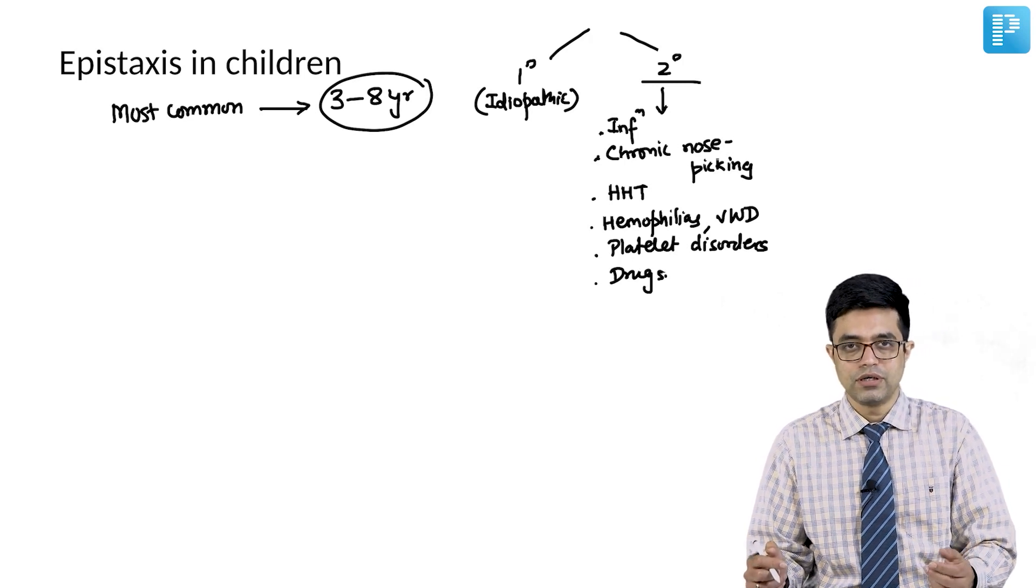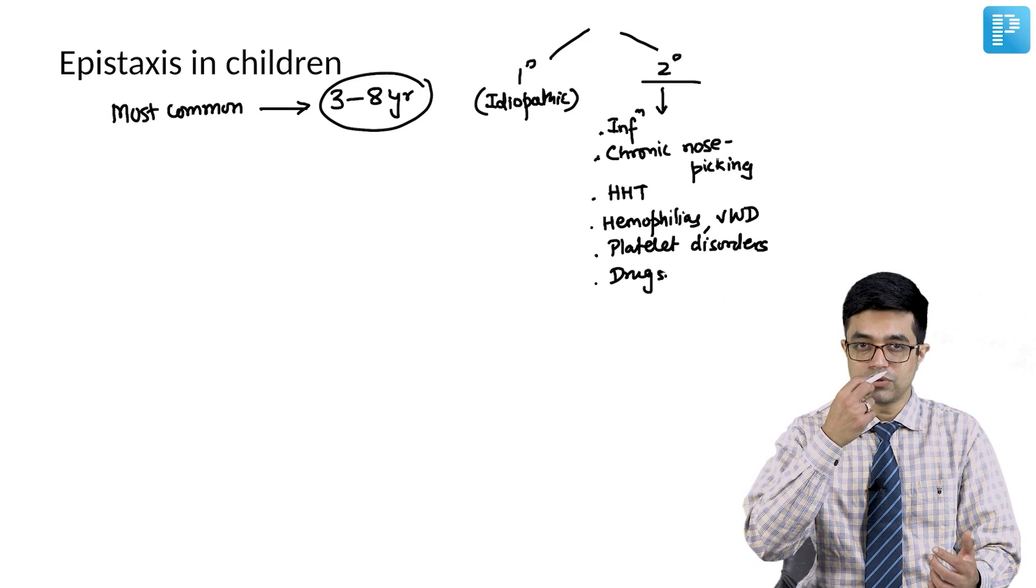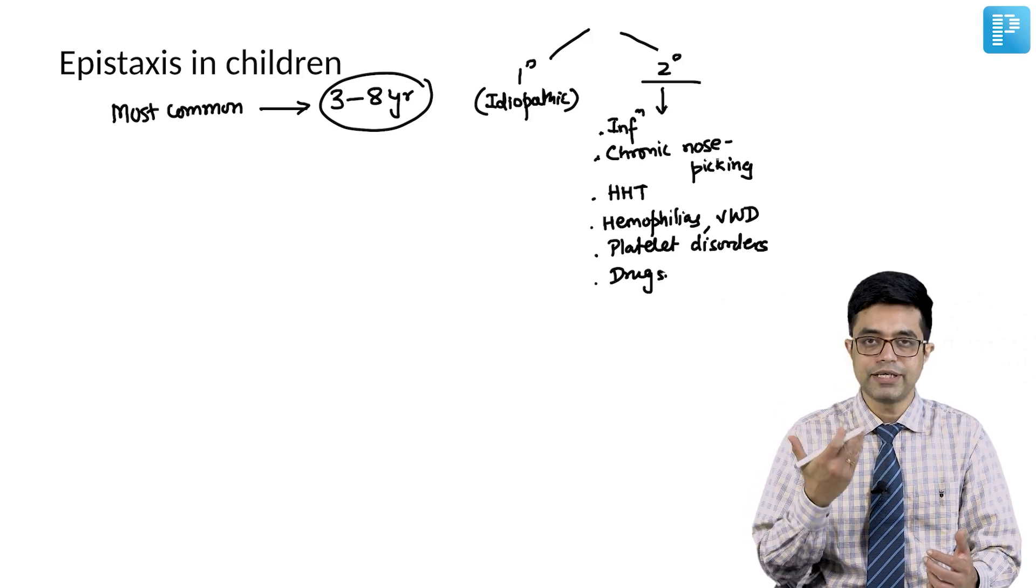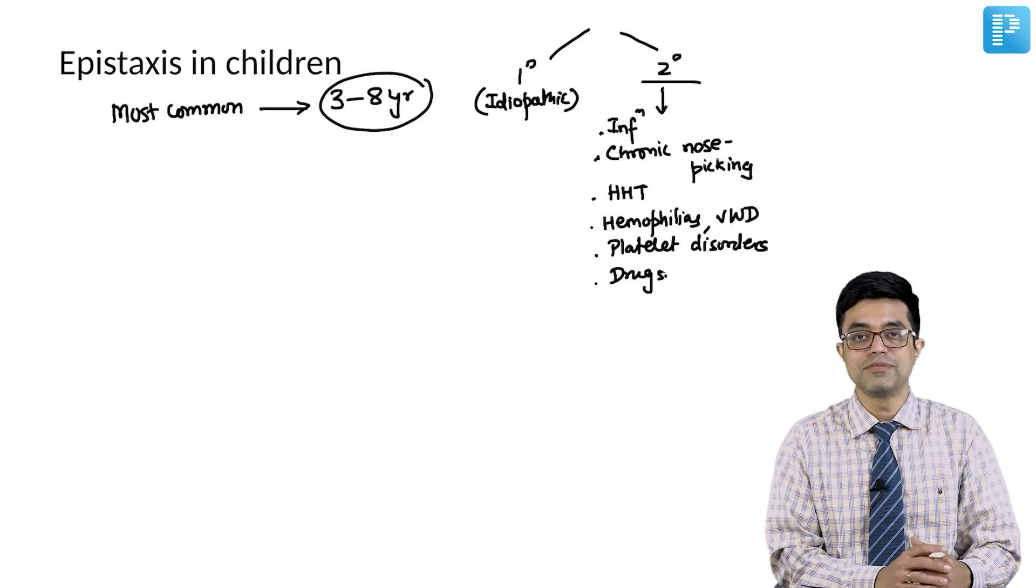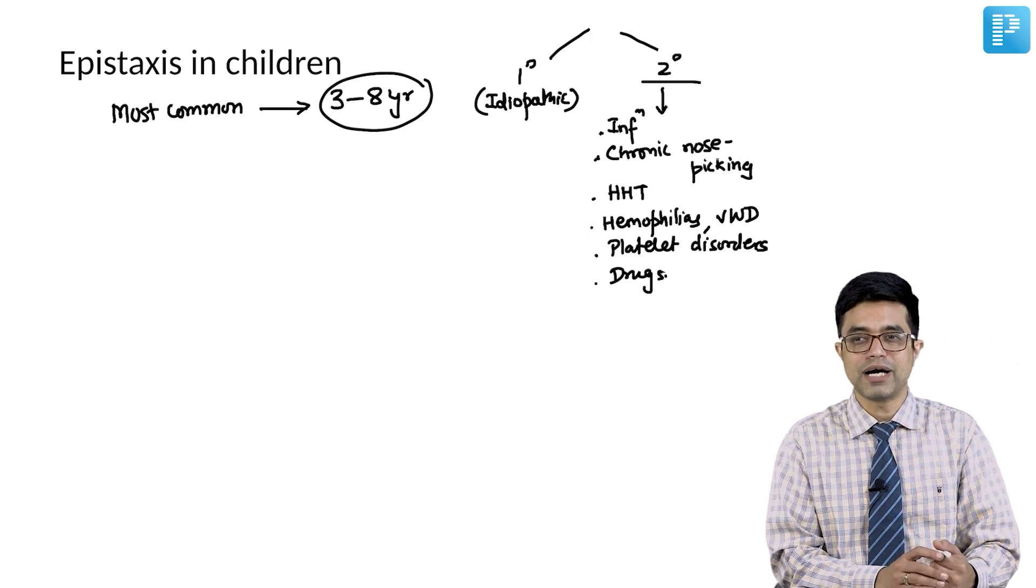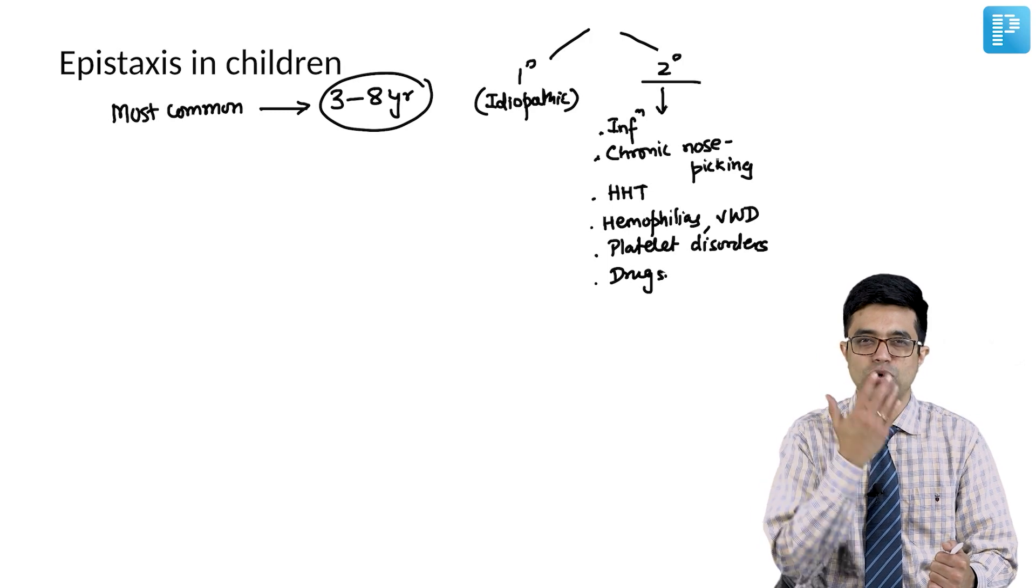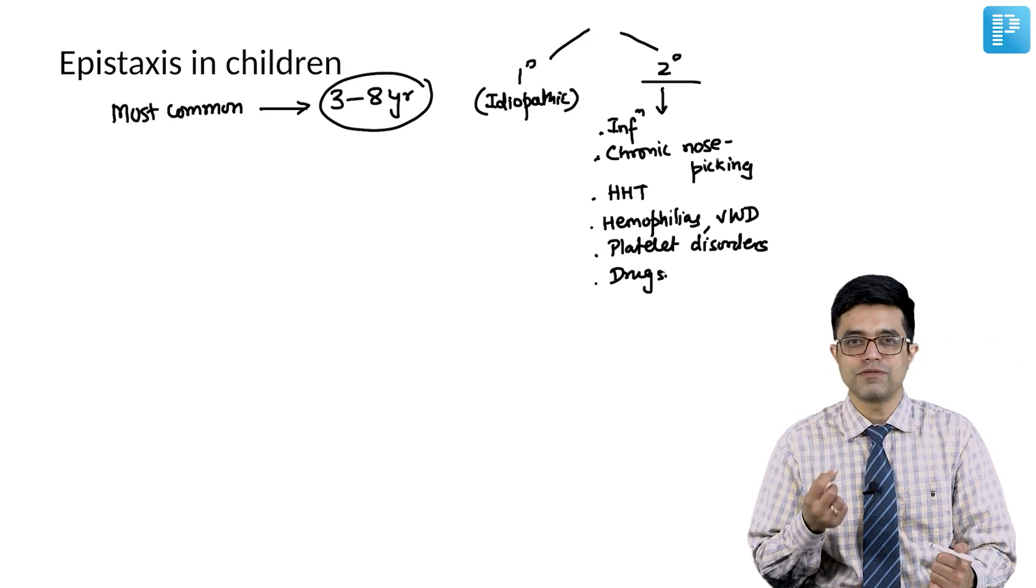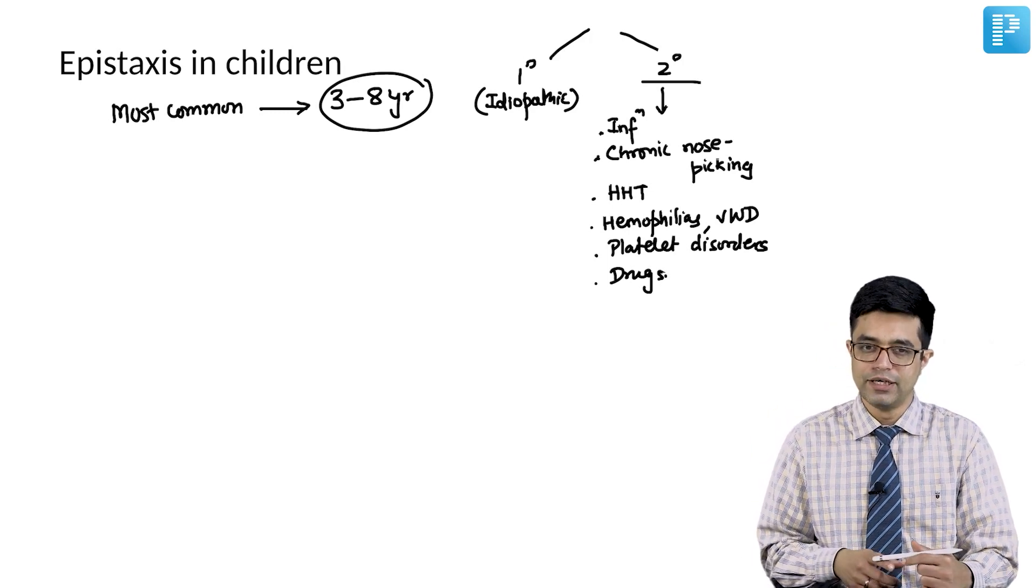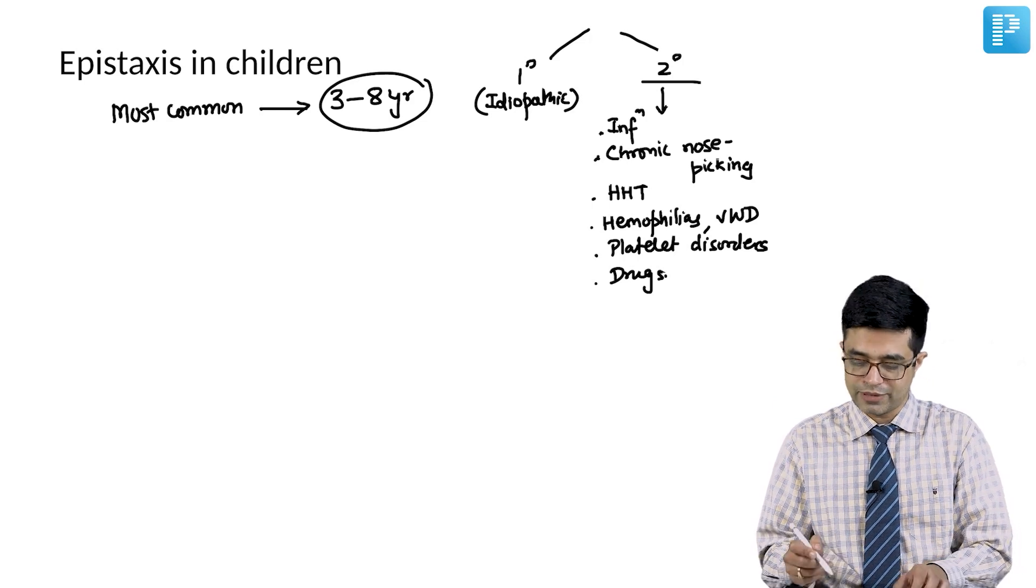Particularly children whose parents frequently put steroid drops in the nasal cavity, the nasal mucosa becomes atrophic. Even with trivial trauma or sometimes simply the child blowing like this, it can cause rupture of vessels and bleeding. So these are the common causes of epistaxis.